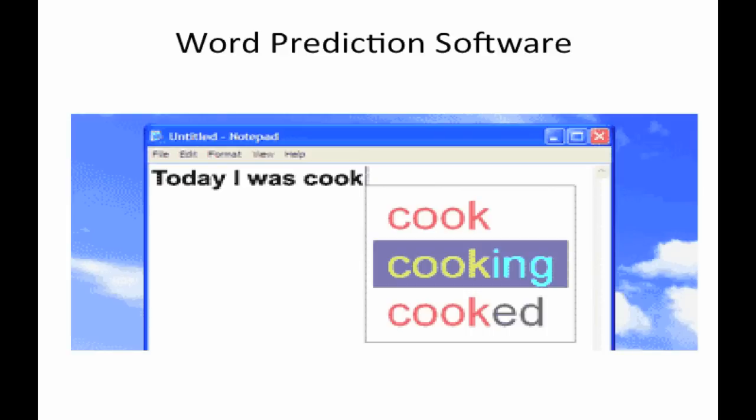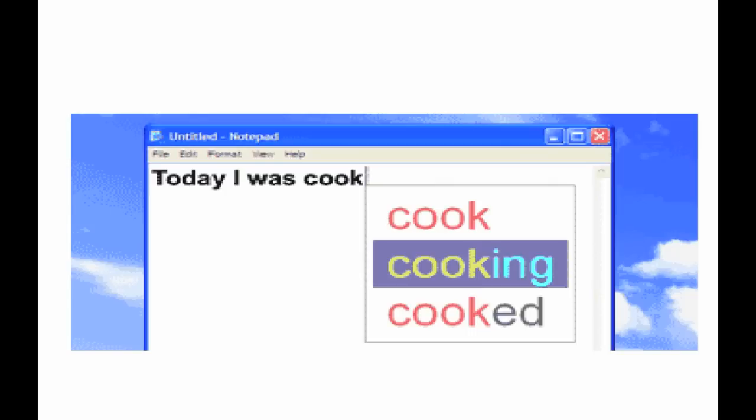Word prediction software programs are built on common patterns of English writing and misspellings, and may have the ability to learn from users' mistakes. As a student types, these programs make predictions and offer suggested next words or phrases. Corrections are often more accurate than a traditional spell checker.